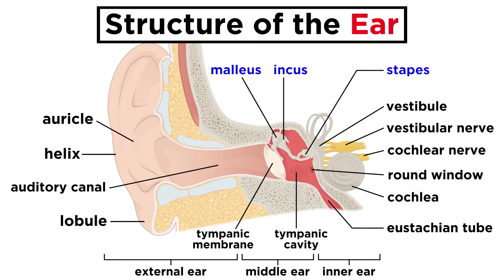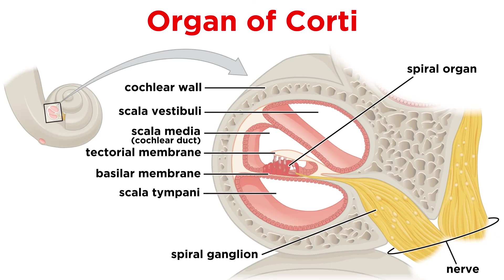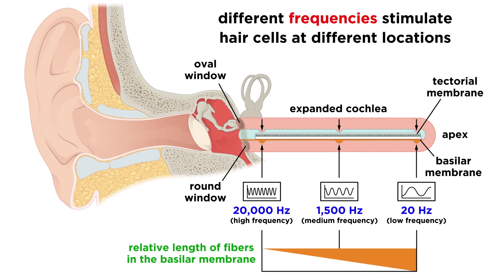The vibrations travel through these three small bones, into the oval window, and then to the cochlea. The internal membrane of the cochlea is the organ of Corti, which is the auditory receptor organ. Vibrations cause hair cells in this region to stimulate firing in the axons of the auditory nerve. Different frequencies of sound stimulate hair cells at different points along the basilar membrane, and this information is encoded in the resulting signal.